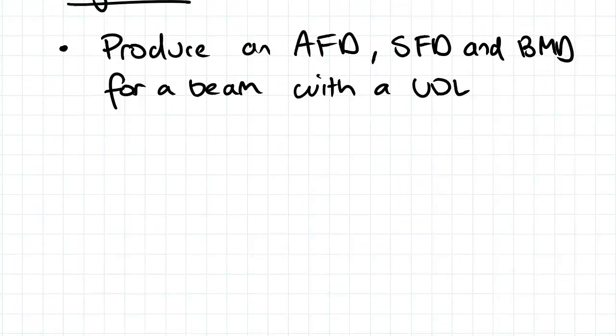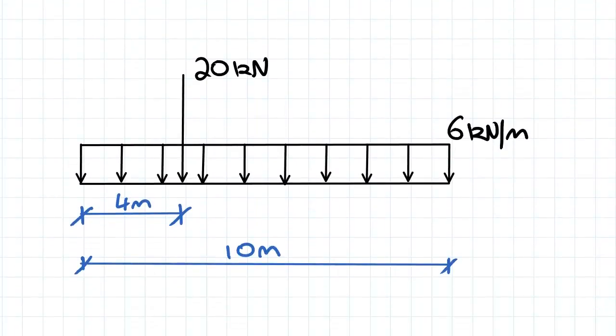So the first step is to draw a free body diagram. We're going to have a reaction at the roller support, just a vertical reaction which we're going to denote BY. At the pin support, you'll actually notice that there are no horizontal forces acting on our beam, so therefore there's only going to be that vertical component for the pin support, AY.